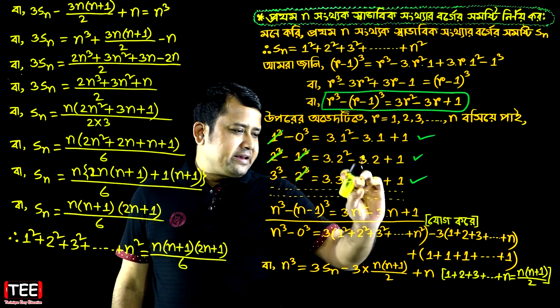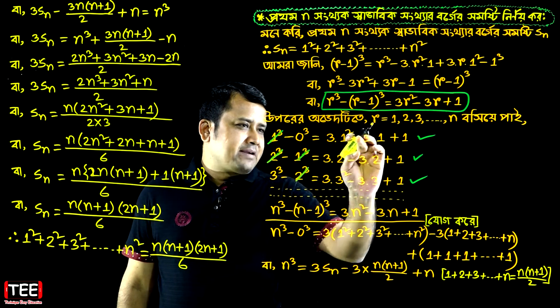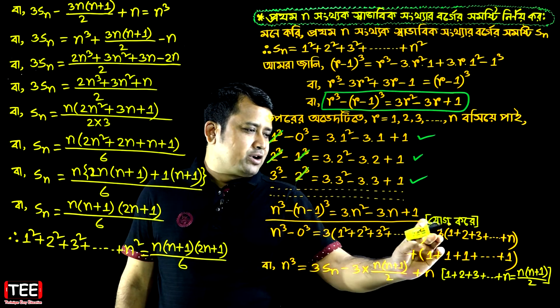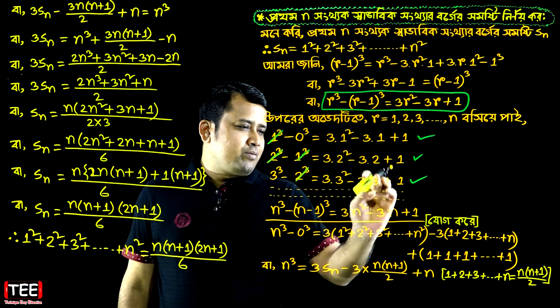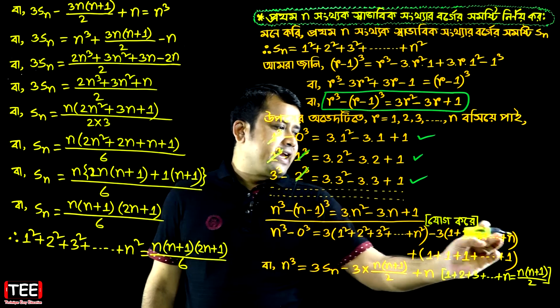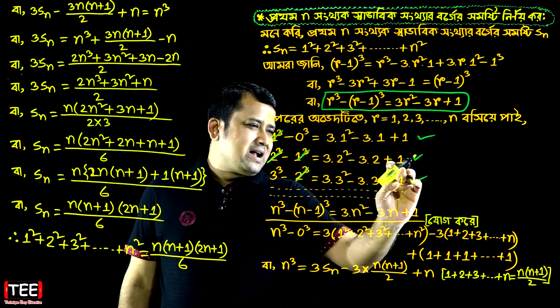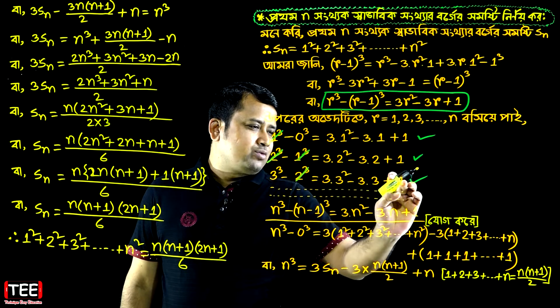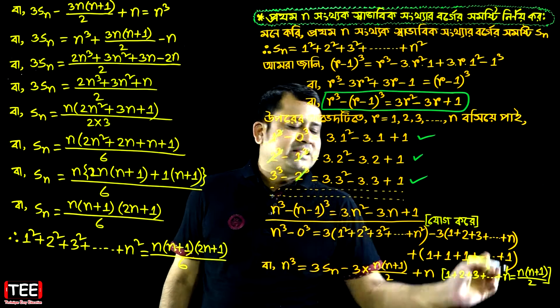And we have minus 3 common, times 1 plus 2 plus 3 plus dot dot dot plus n. And we also have 1 plus 1 plus dot dot dot plus 1, repeated n times.